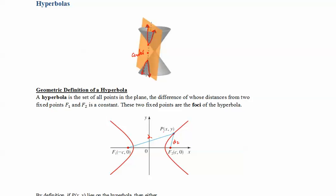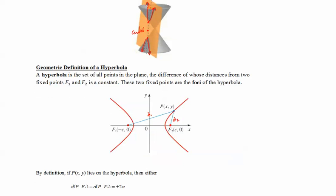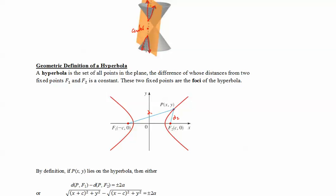So the difference is fixed as a constant, and we make this constant equal to plus or minus 2a, because it depends. Sometimes d1, this distance between F1 and P, will be smaller than the distance from F2 and P.